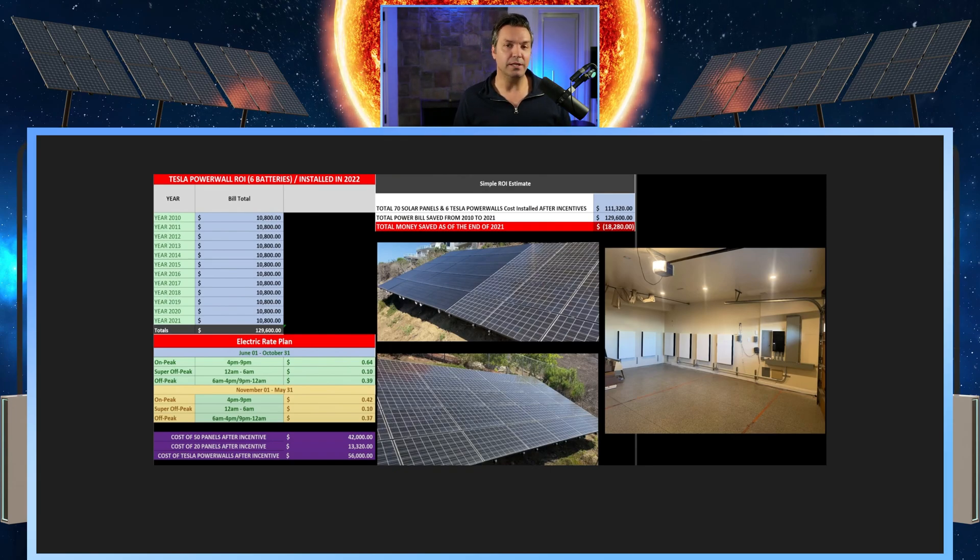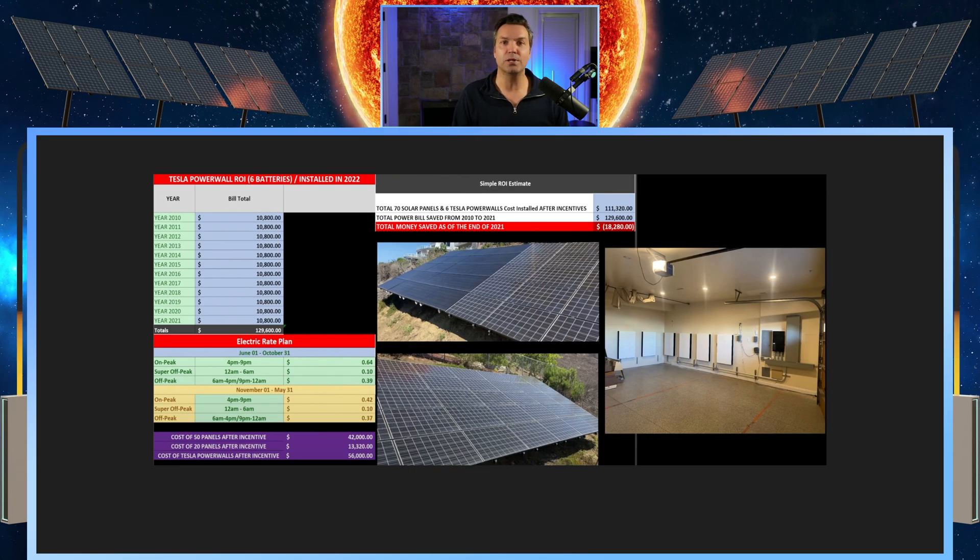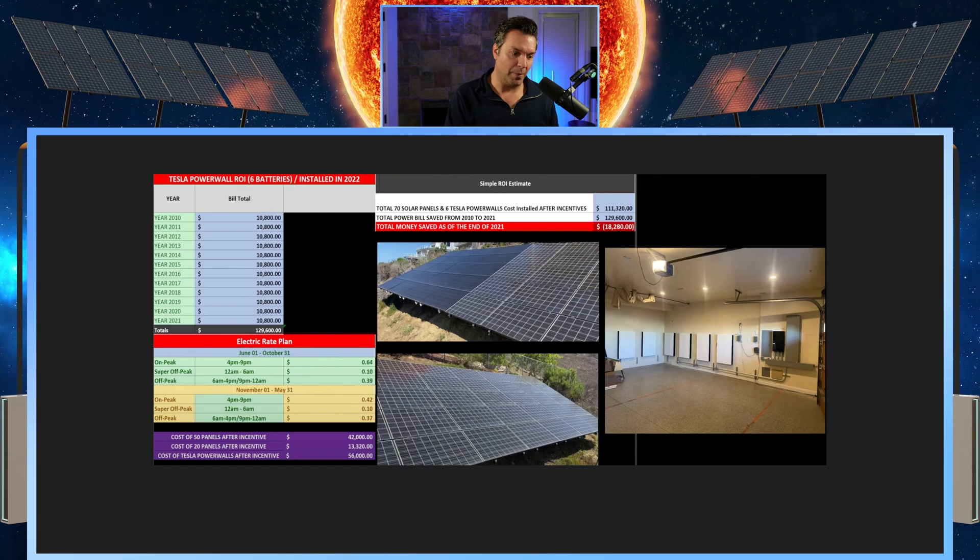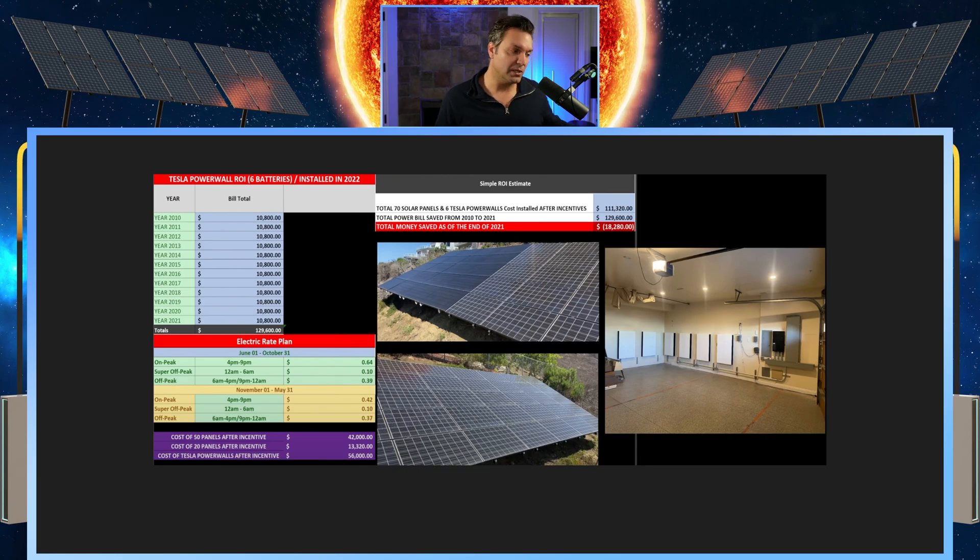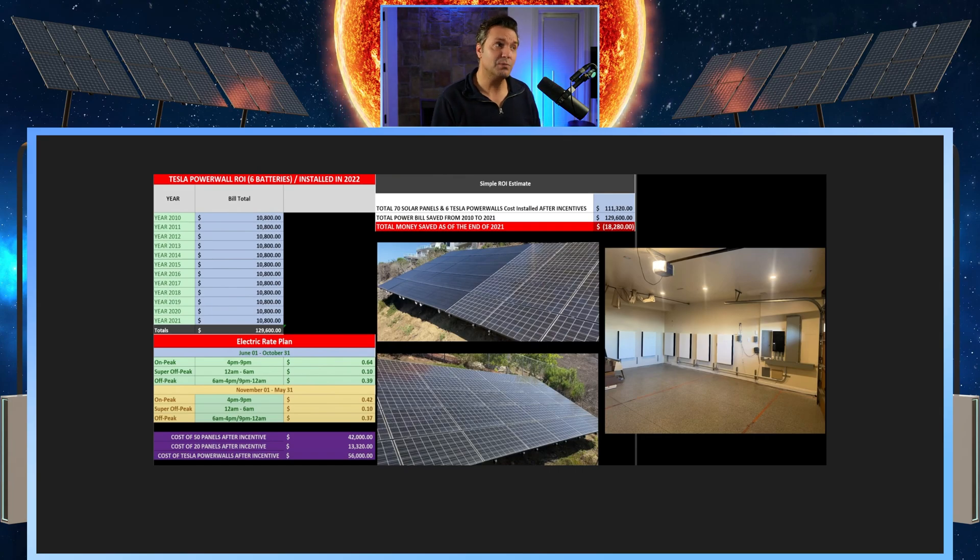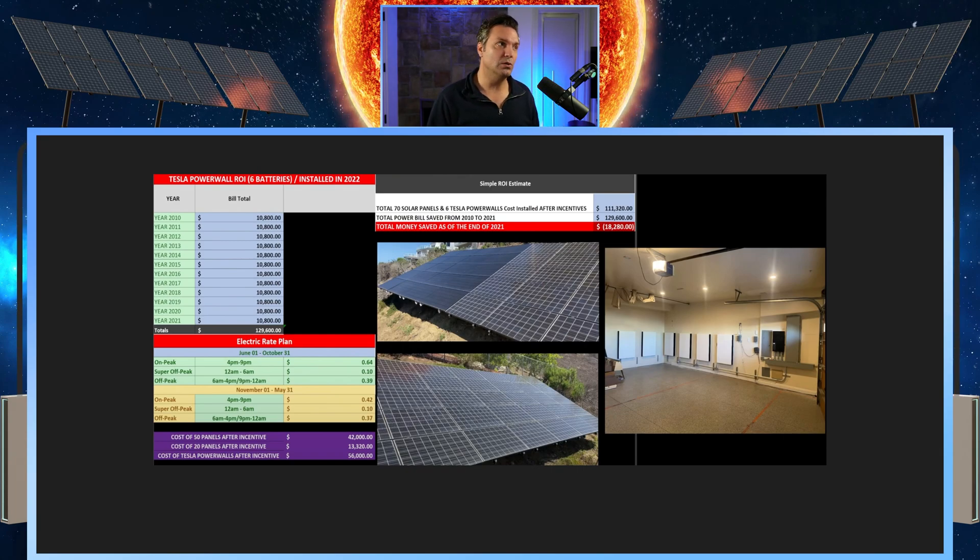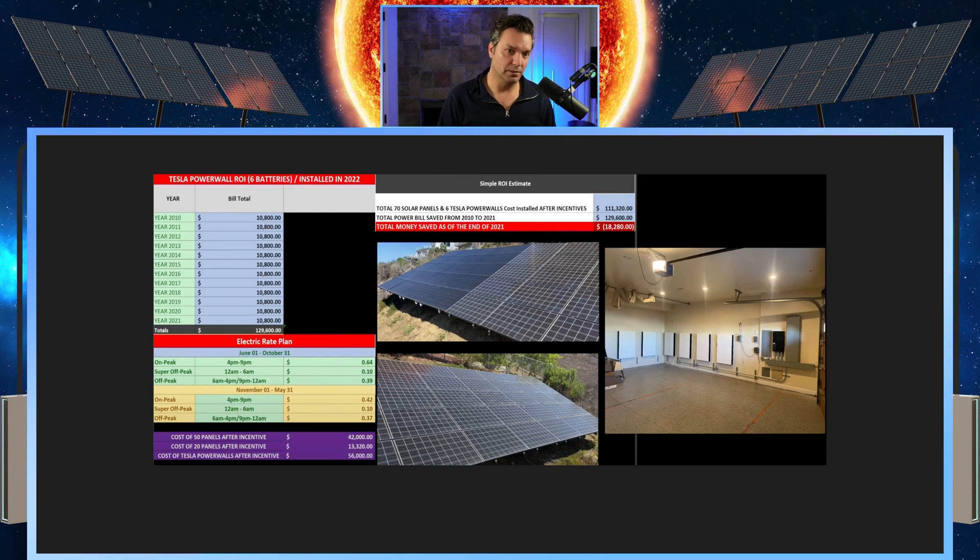I then took the solar panel cost, total 70 solar panels, the six Tesla Powerwalls after incentives, because I did take advantage of those. My total cost for the system, $111,320. Then what I did is I took what my, and I'm guessing here, what my power bill would have been over all those years, because it was around $1,000 back in 2010. Who knows what the power increase costs, how much those power bill would have been without this going forward. So I subtracted what those power bills would have been, $129,600. Subtracted those, and as of 2021, and I didn't get the Powerwalls until last year.